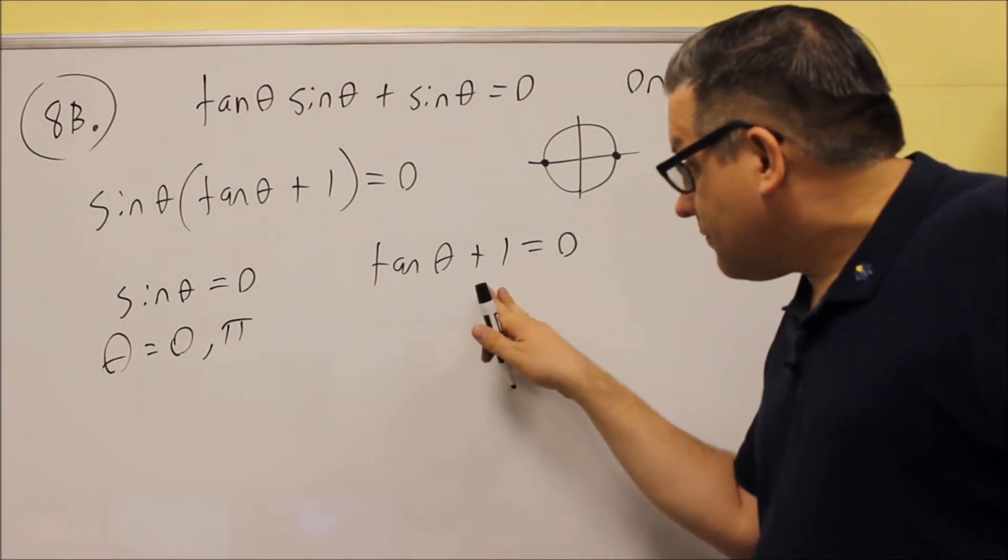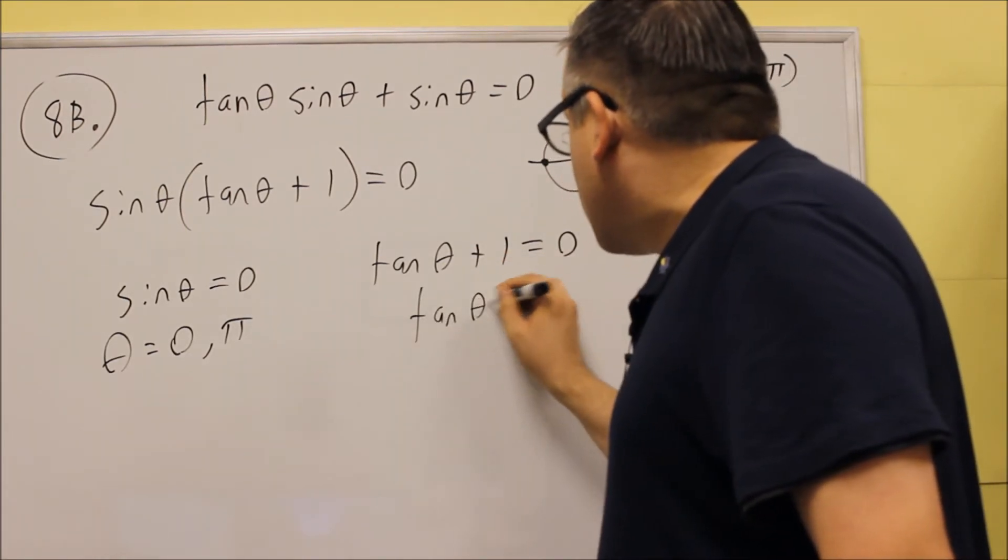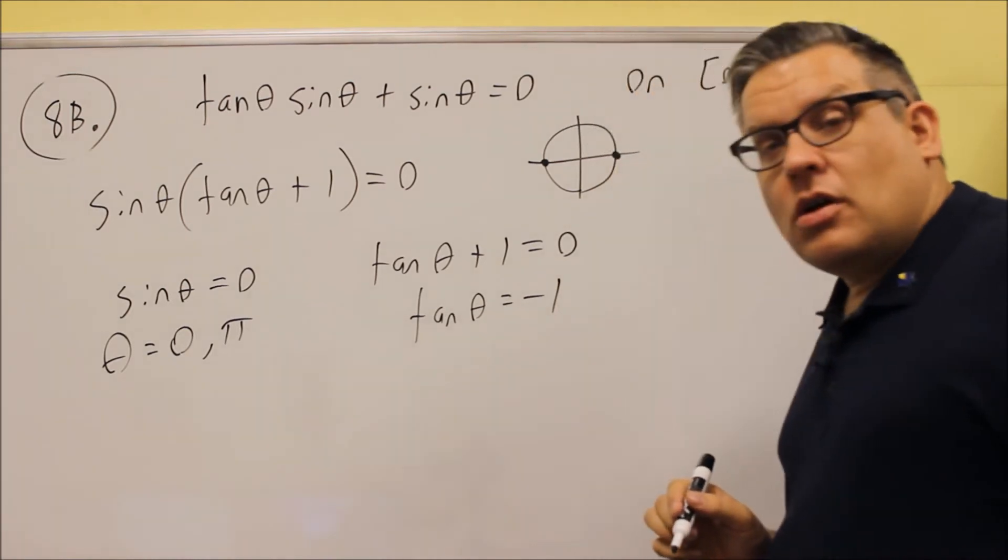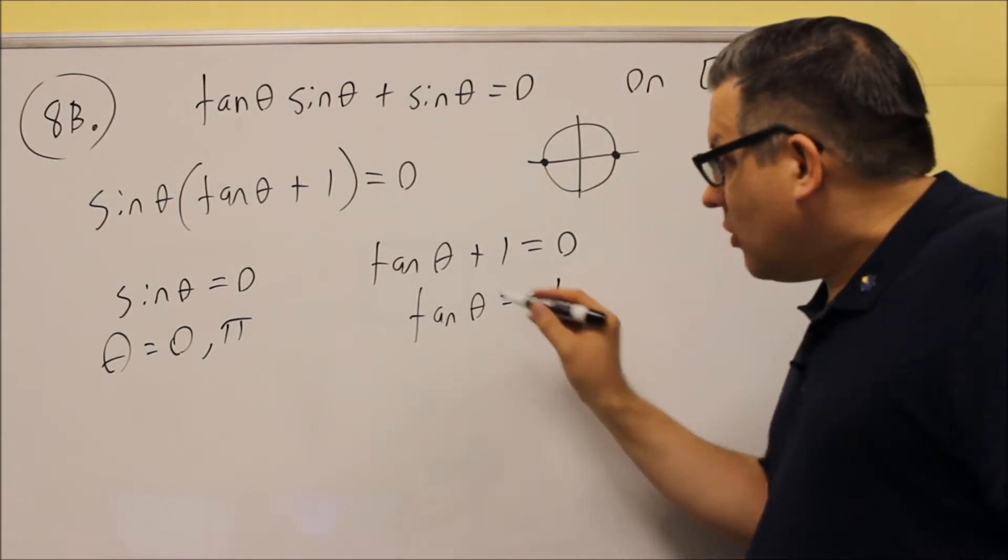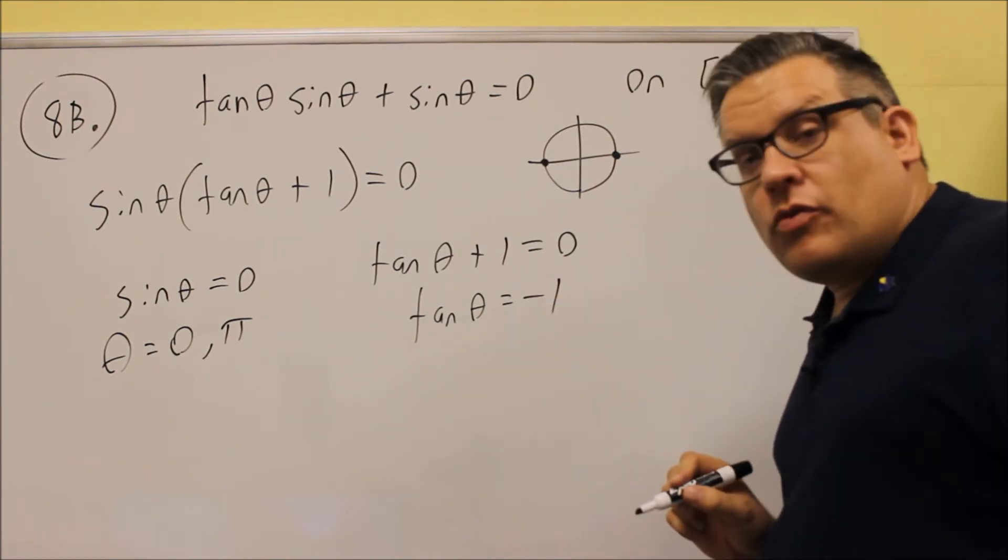Now, the second one, we want to solve for tangent, so tangent theta equals negative 1. So, we're going to find all the angles on here where tangent is equal to negative 1.